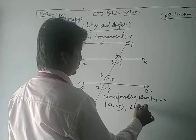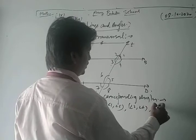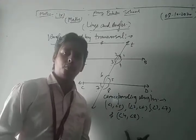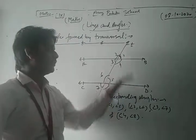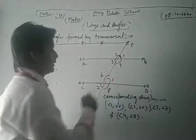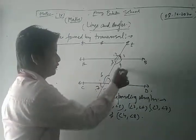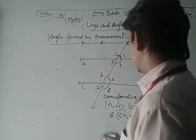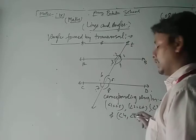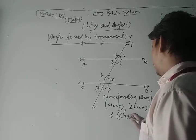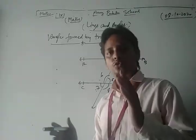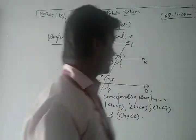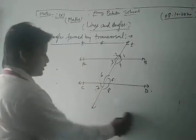According to a very important theorem, if two parallel lines are cut by a transversal, the corresponding angles are equal to each other. So angle 1 equals angle 5, angle 2 equals angle 6, angle 3 equals angle 7, and angle 4 equals angle 8. This is a very important concept.